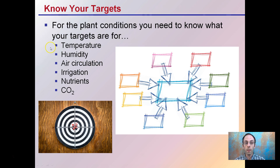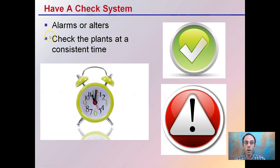Temperature and humidity can vary depending on the growth stage, so be mindful of that — know what your targets are for the particular stage of plant you have. You want to have a check system; alarms or alerts are great. You also want to check the plants yourself at a consistent time so you know if something's off — right after a pump comes on, right after a pump comes off, after a light comes on or goes off — just to confirm whether everything is okay or if there's something to be concerned about.